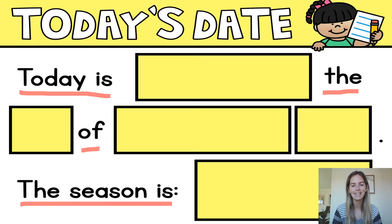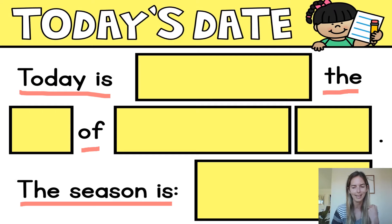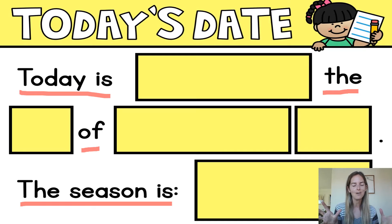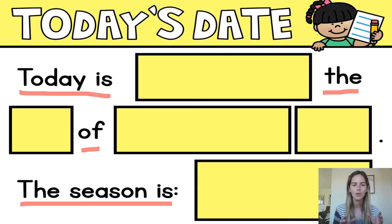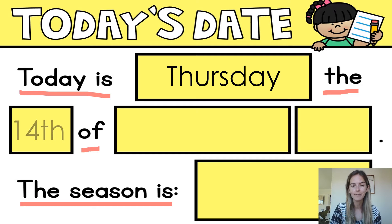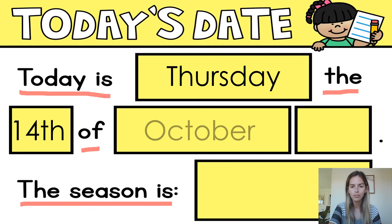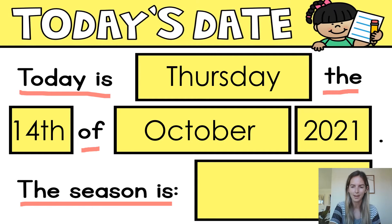And then the season is — now do you know which season it is? Remember we have summer, autumn, winter and spring. I'll give you a clue — it's the season when there's lots of flowers coming out and it's starting to get warmer. Okay, so pause the video, fill in the details and then come back and we'll do it together. Today is Thursday the 14th of October 2021. The season is spring.